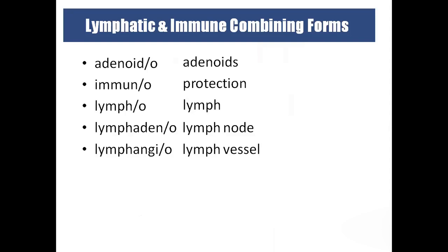Coming to the combining forms used in the lymphatic system: adenoido means adenoids — adenoids are a type of tonsil present near the nasopharynx, and inflammation of adenoids is called adenoiditis, often treated by surgical removal. Immuno means protection. Lympho means lymph. Lymph adeno means lymph node, and adeno means enlarged gland. Lymph angio means lymph vessel.